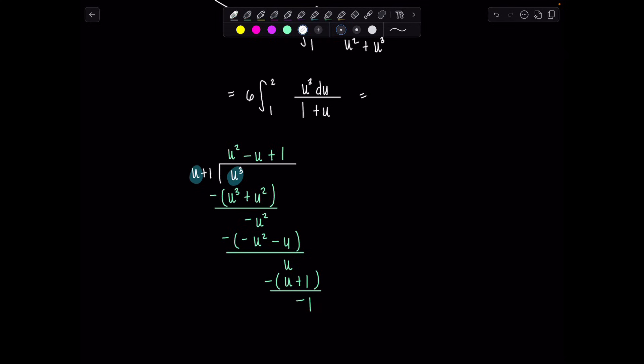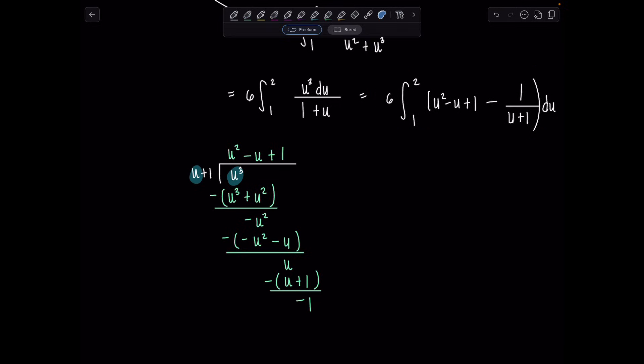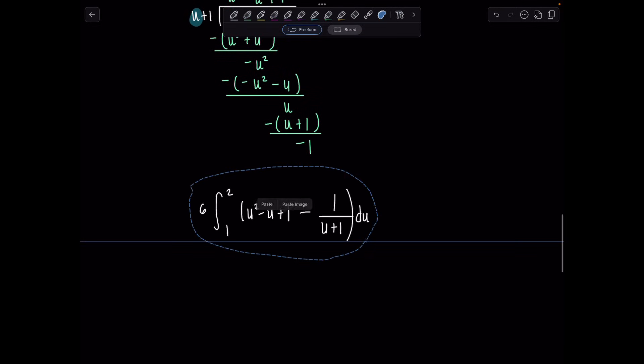So how do you rewrite your integrand? Just leave the 6 outside. It's minding its business. Integral 1 to 2. I have u squared minus u plus 1 minus my 1 remainder over u plus 1 du. Are we good? Let me copy this down so we can continue below unfettered. I'm feeling squished. How about you? Yeah, wee bit squished, right?